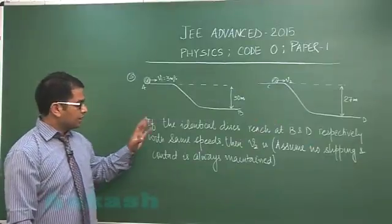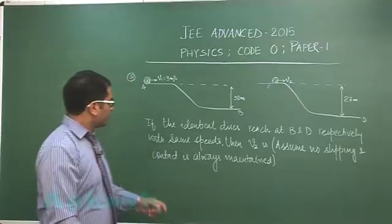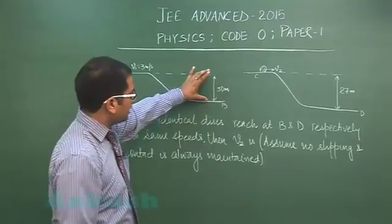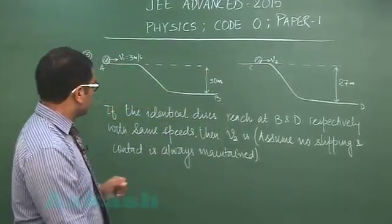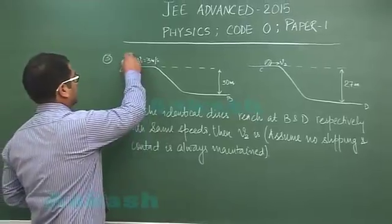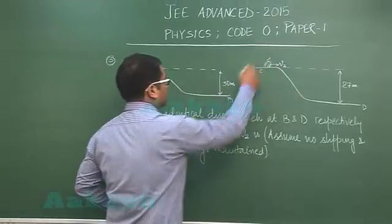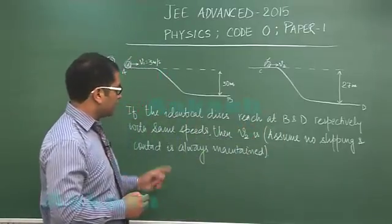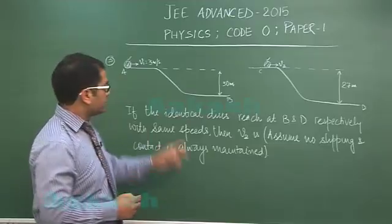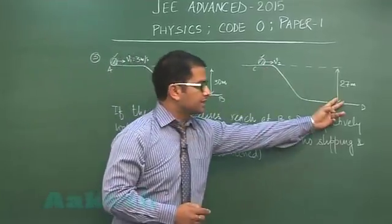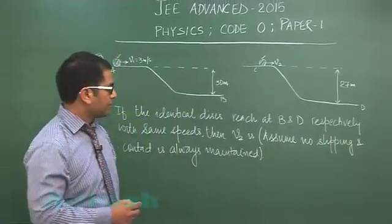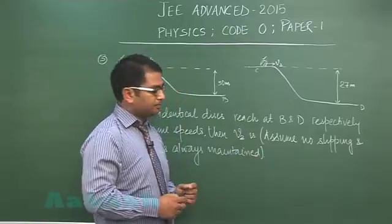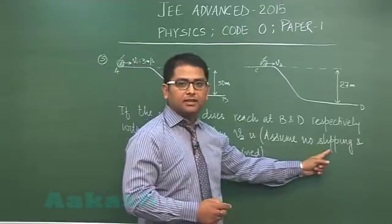Question number 3 is from rotational dynamics. The figures show height differences of 30 meter and 27 meter. If the identical disks - these two disks - reach at b and d respectively with same speeds, that means when this reaches b and this reaches d, the speeds are same. We need to calculate v2, the initial speed of this disk.